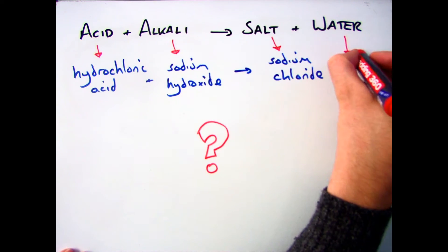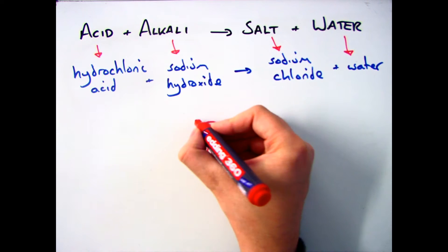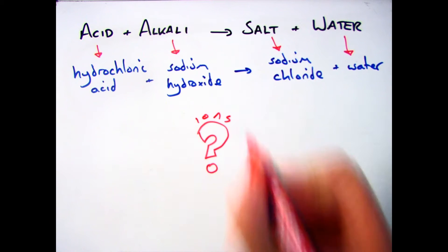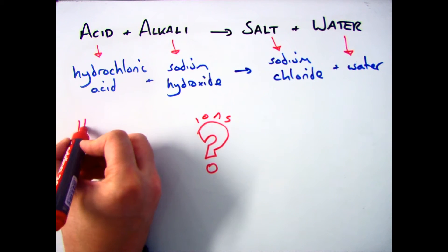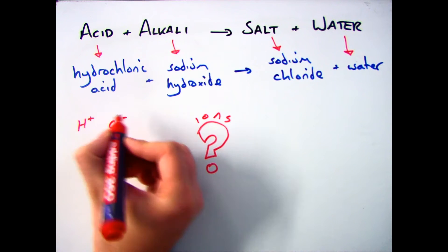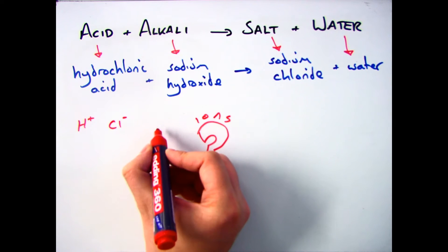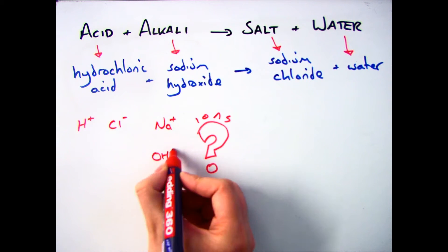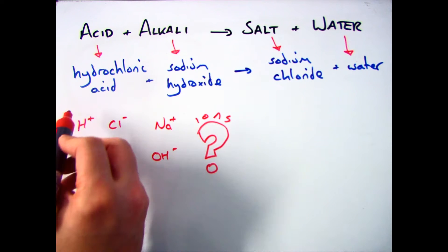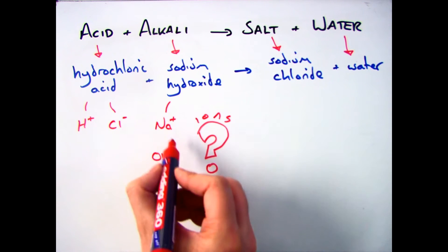What you do need to know is what's actually happening during that reaction, in particular in terms of the ions. In this reaction here, we have four different ions involved: hydrogen and chlorine, sodium and your hydroxide ion. There are two particular ions involved in neutralisation.